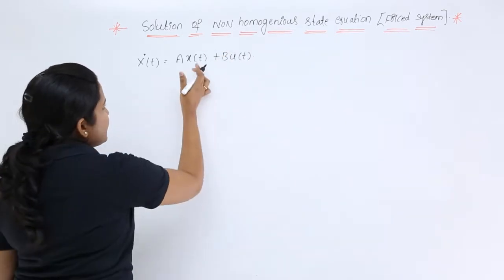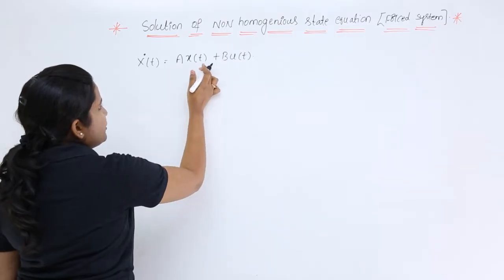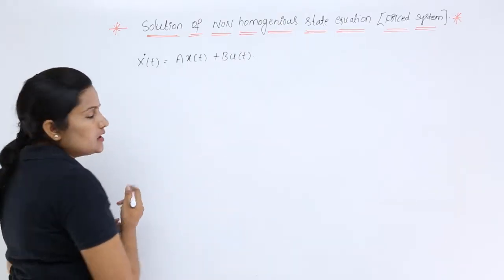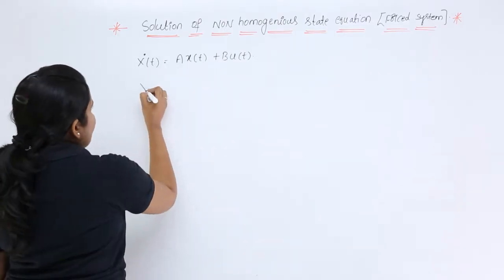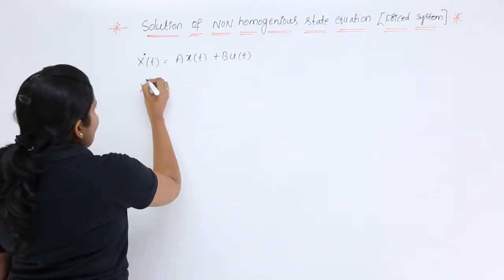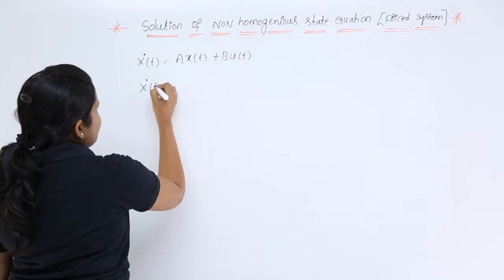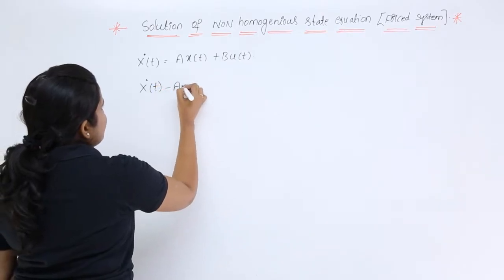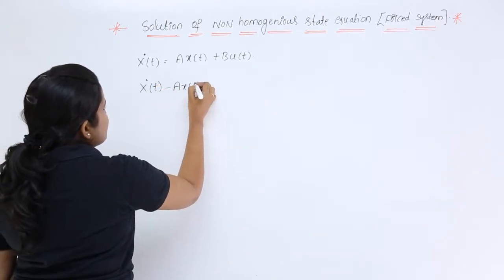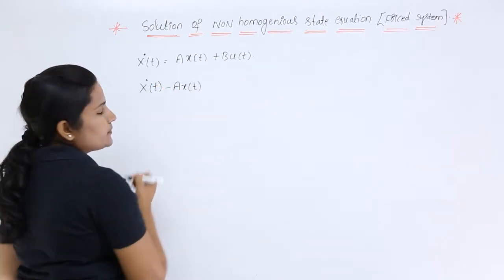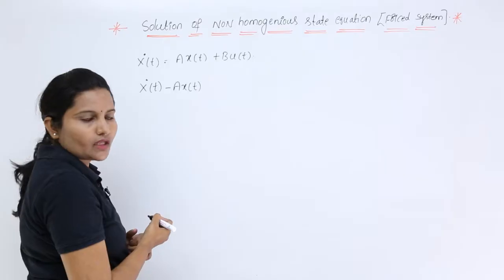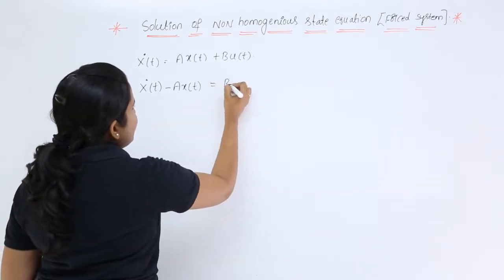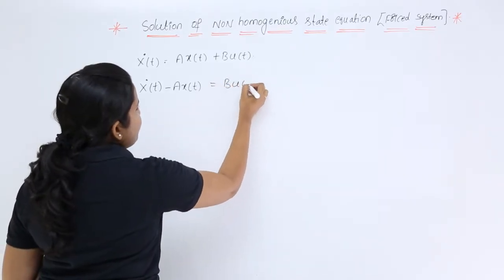Sending the A·x(t) term to the left side, we get: x'(t) − A·x(t) = B·u(t). This is equation 2.